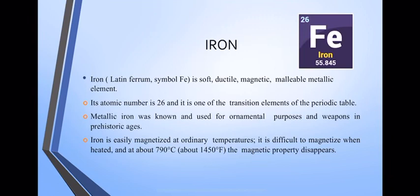Iron is easily magnetized at ordinary temperature and it is difficult to magnetize when heated. At about 790 degrees Celsius, the magnetic property disappears. At higher temperature, it loses the magnetic property.